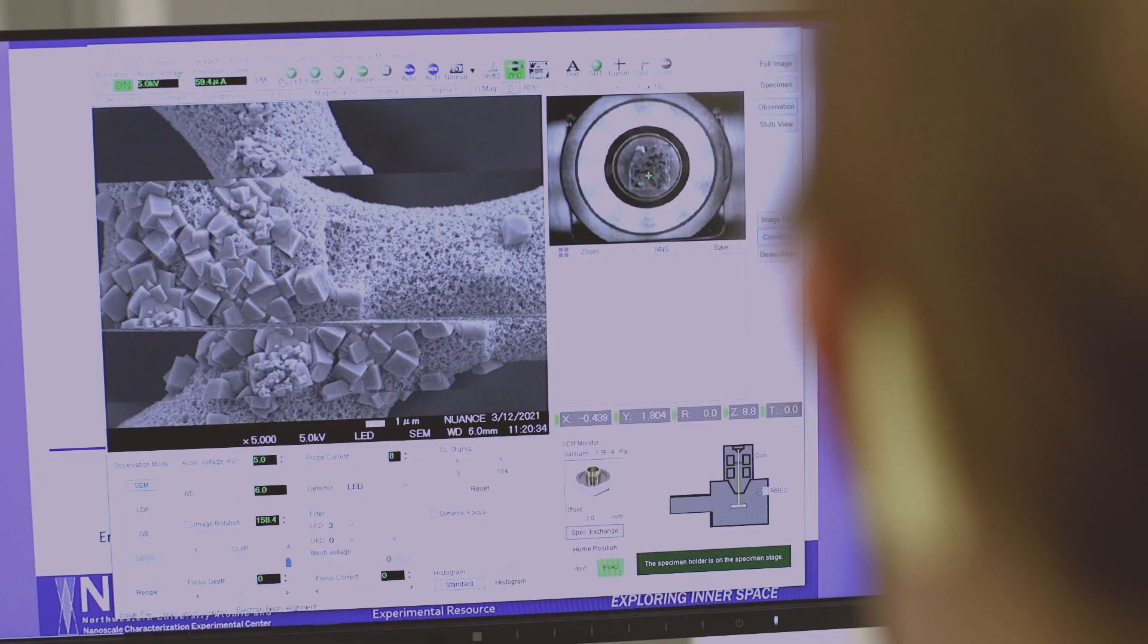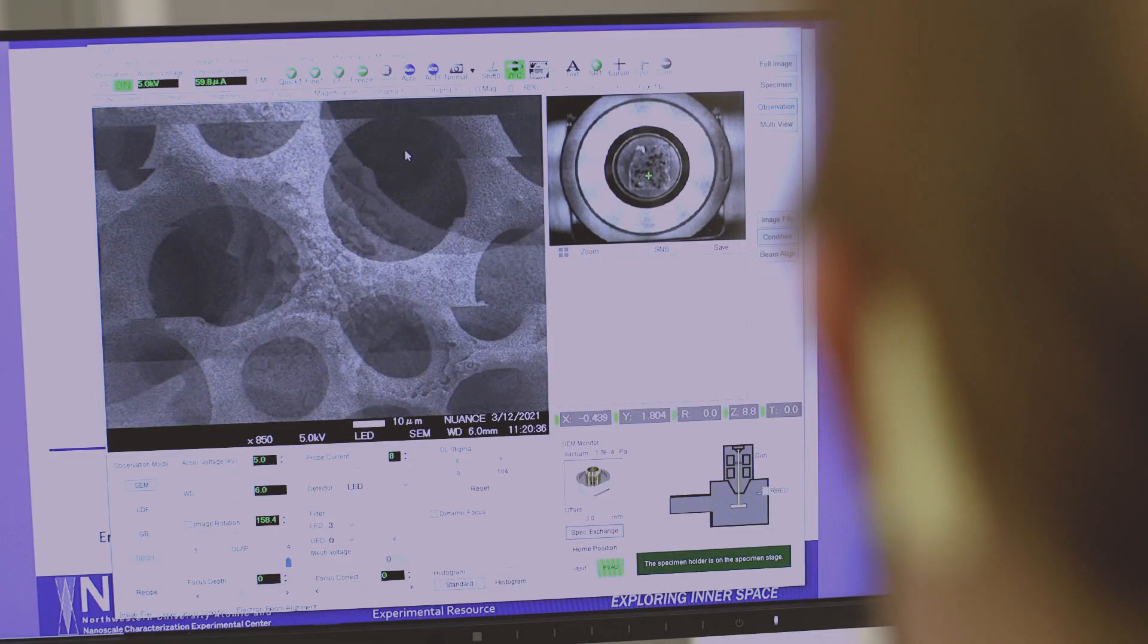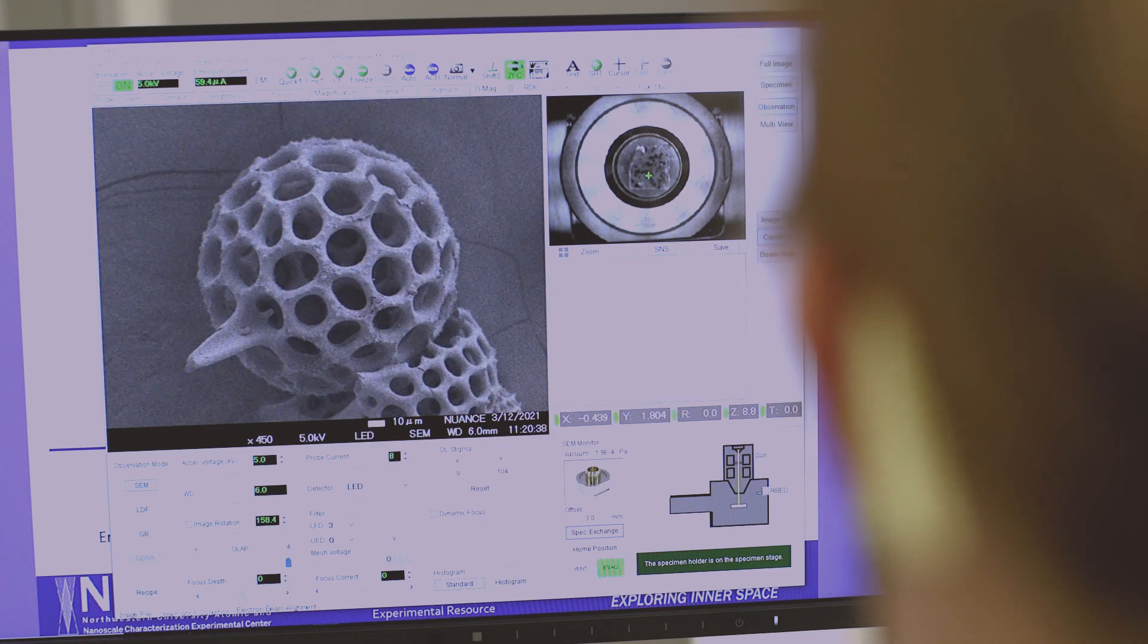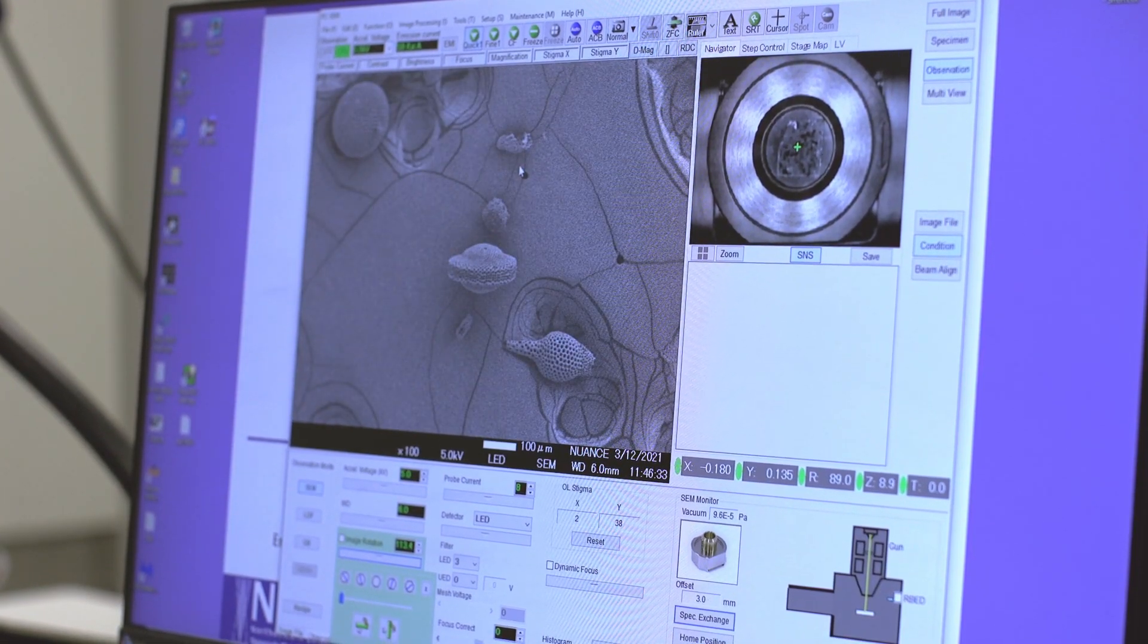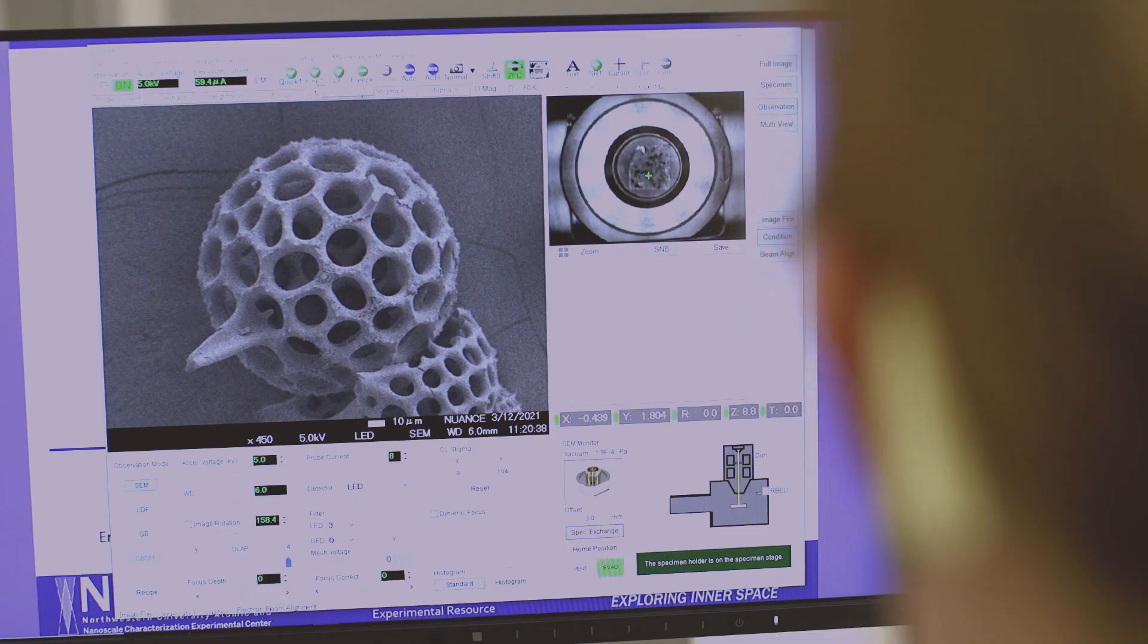Right now I am at 20,000 times magnification. This single sample holder has about 100 single radiolarians on it. The radiolarians are pretty small. They are about 100 to 200 microns in width. And that is about two times the size of the width of a single human hair.